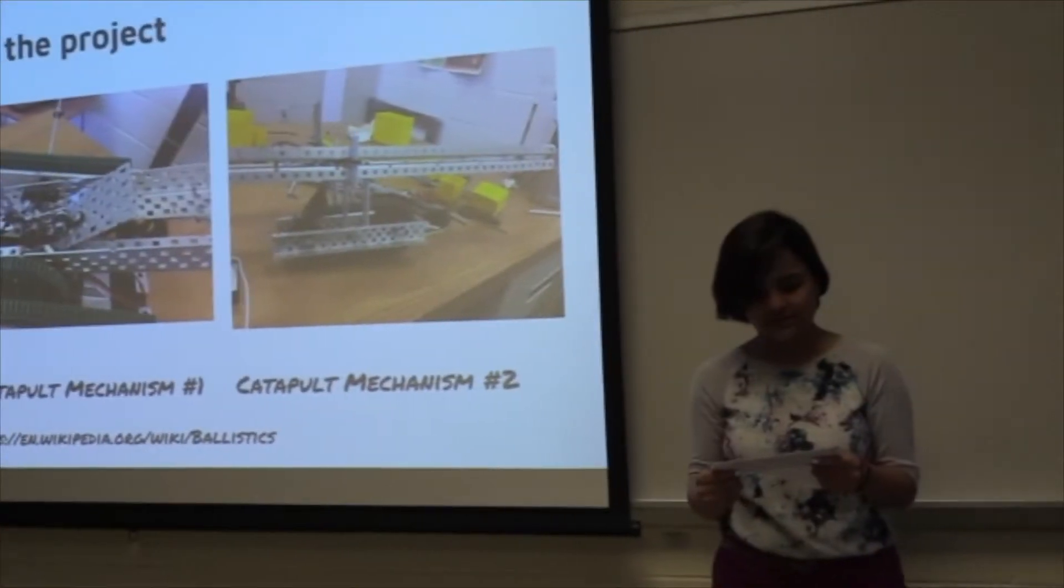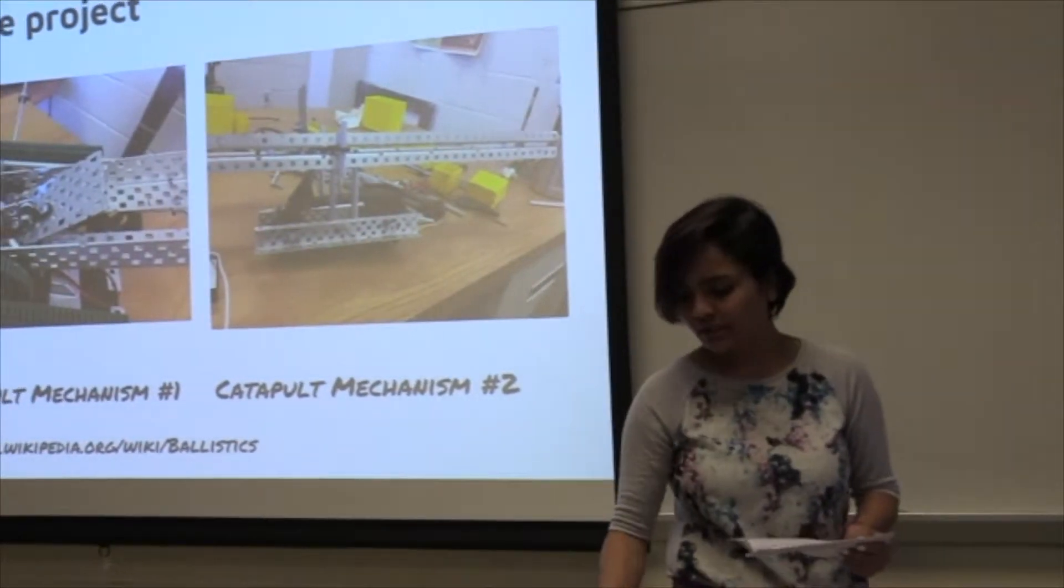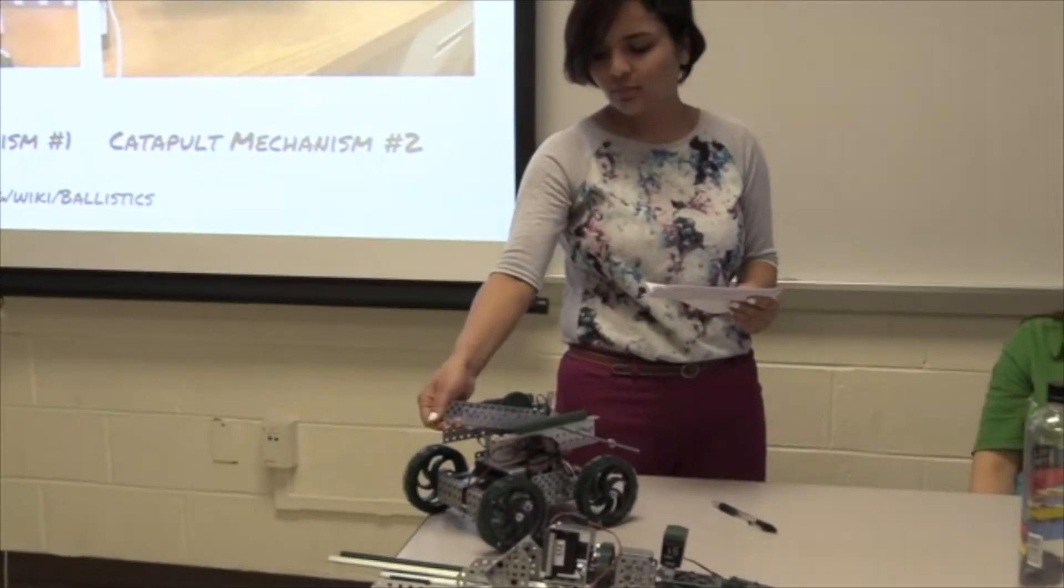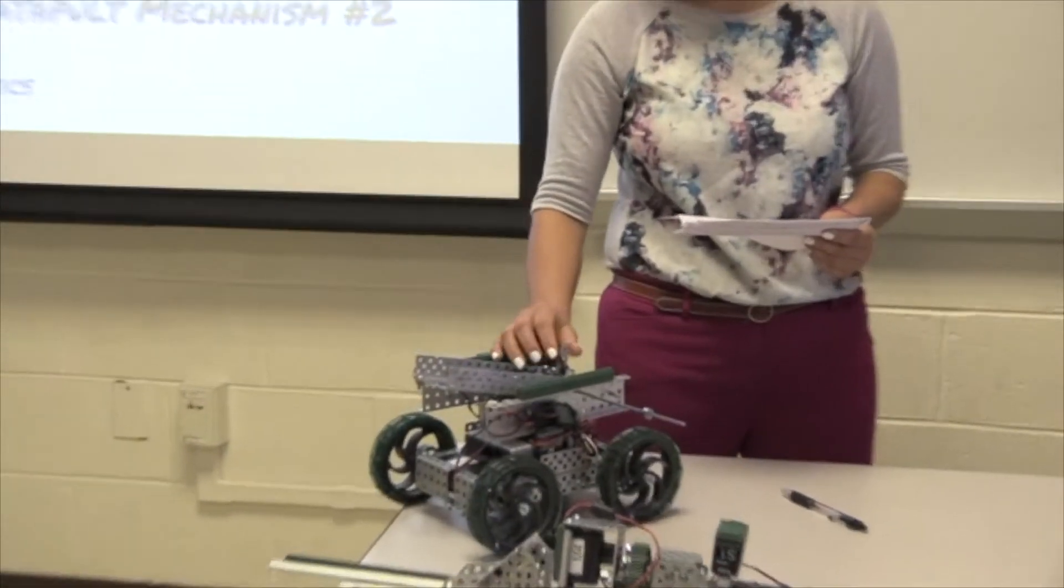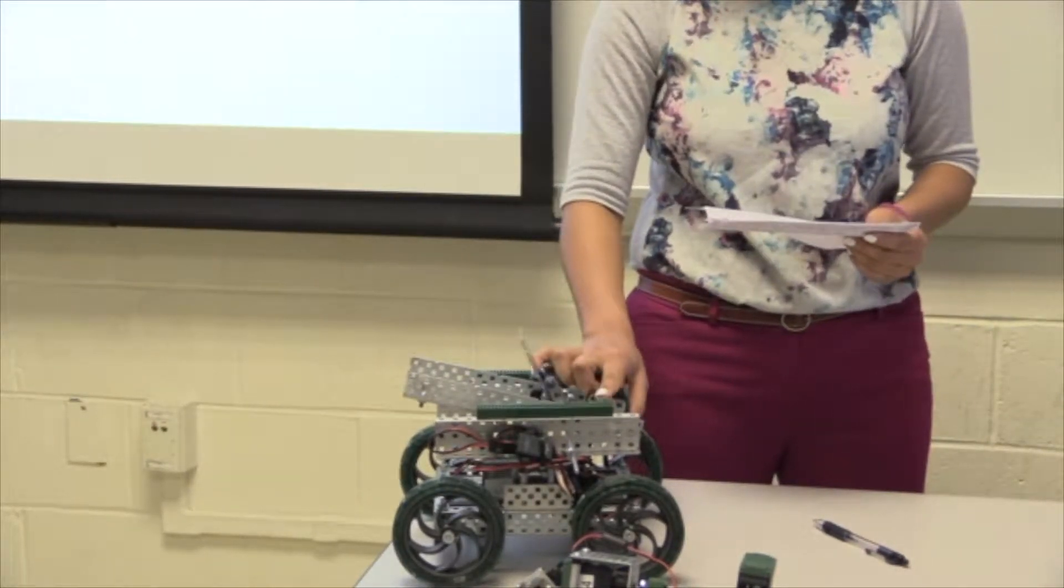During summer one, we built different prototypes with different mechanisms. One of the prototypes we built is this. I use a catapult mechanism for the ball launcher, which will help us to launch a ball at a certain angle and with a certain speed.